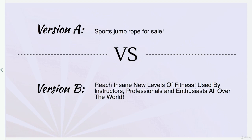Here's a Version A versus Version B comparison. Version A is a headline you see all the time on Amazon, eBay, everywhere: 'Sports jump rope for sale.' It says what it is and it says it's for sale. Version B: 'Reach insane new levels of fitness, used by instructors, professionals and enthusiasts all over the world.' That's not telling you there's a jump rope for sale, but it's telling you what it can do for the customer. If they're already reading the description of the product, they know what they're looking at. They don't need to be told there's a jump rope for sale — they've just seen what they clicked onto. What they want to know is what it can do for them. Version B is clearly winning over Version A.